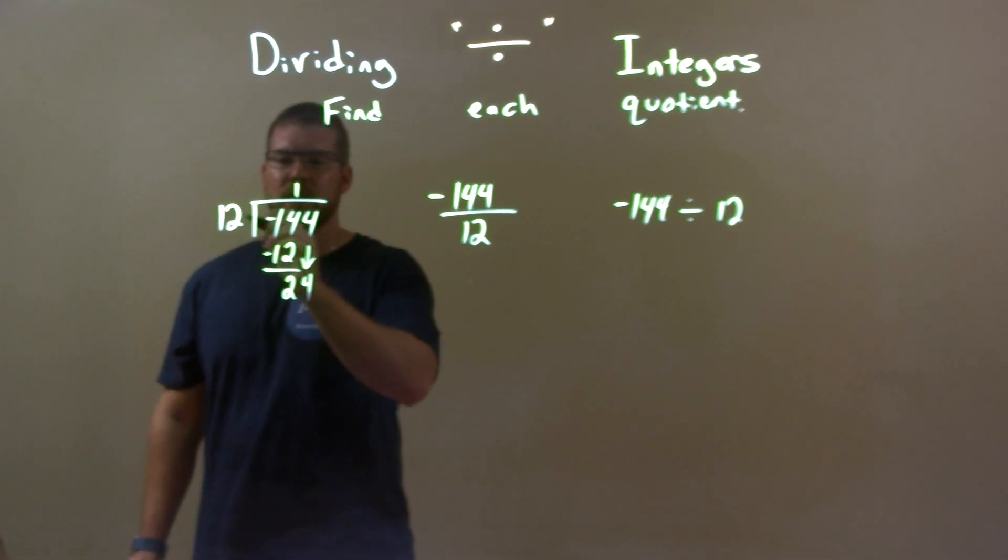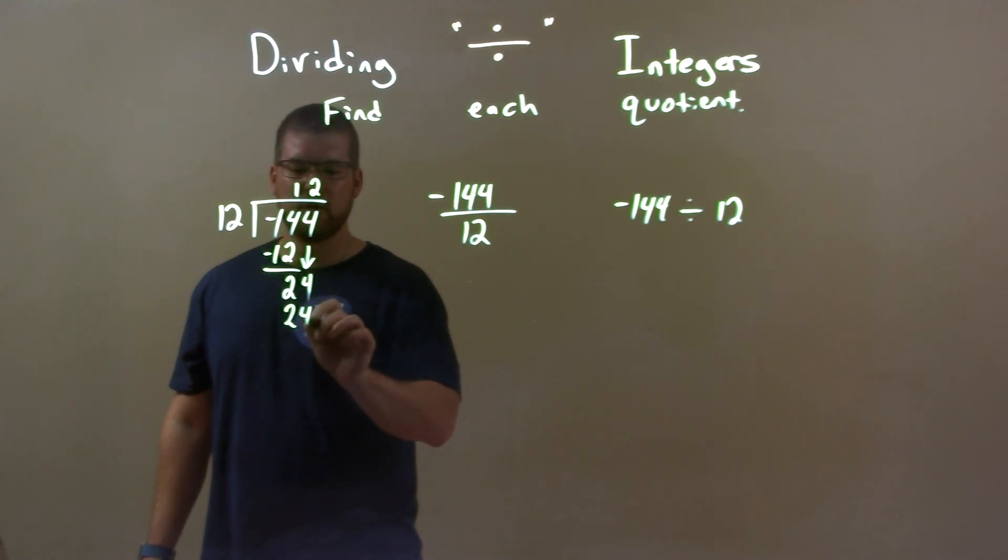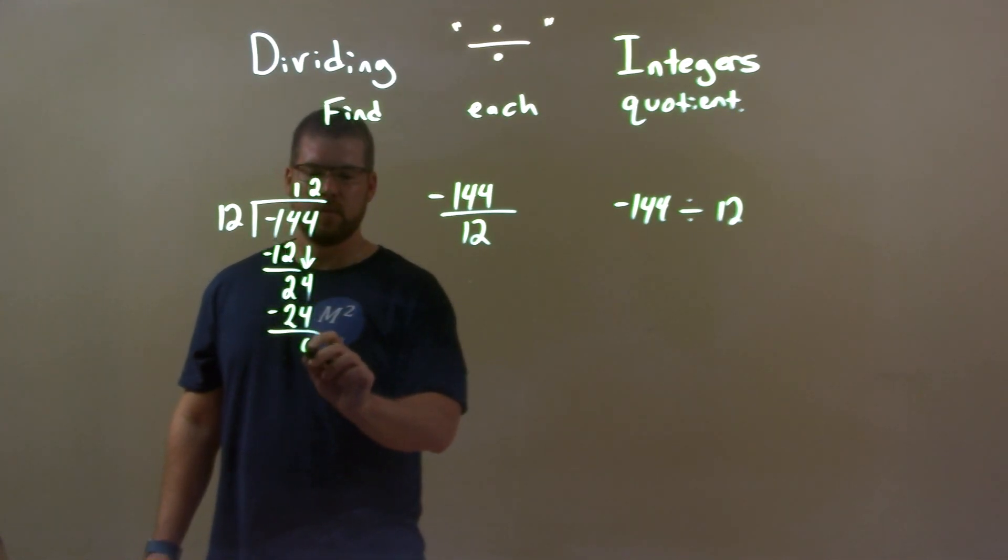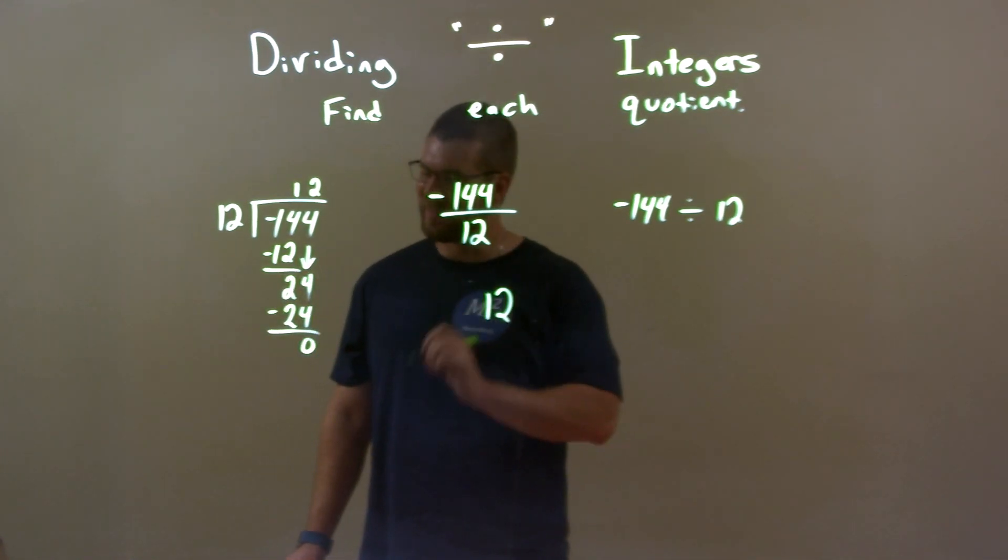So now we have how many times does 12 go into 24? That's 2 times, right? 2 times 12, 24. Subtract, we get a 0. So we just have 12 here as our final answer or almost final answer.